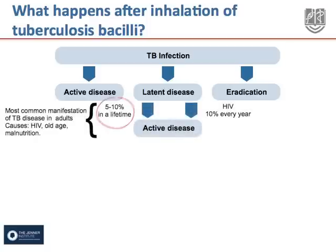The risk of developing active TB is 5–10% over a lifetime, but the risk is 10% every year for people who are co-infected with HIV.